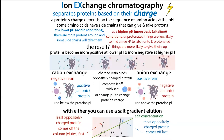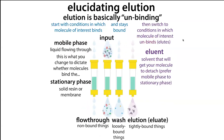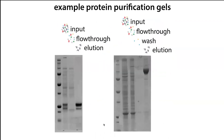How much salt or competitor you need depends on how tightly your protein is bound. We can use different concentrations to release things that are loosely or tightly held. One approach is a simple stepwise elution — you start under conditions where your molecule of interest will bind. Once it's bound, some material will go straight through during the binding period; this is called the flow-through, which contains the non-bound things. Whatever comes through when you load your input onto the column is your flow-through — your protein of interest should not be in it, whereas everything else should be.